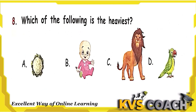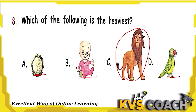The next question is: which of the following is the heaviest? There is a cauliflower, a toy, and a parrot — they are all small things and not heavy. But this is a lion, and a lion is a very heavy animal. So option C is the right answer.